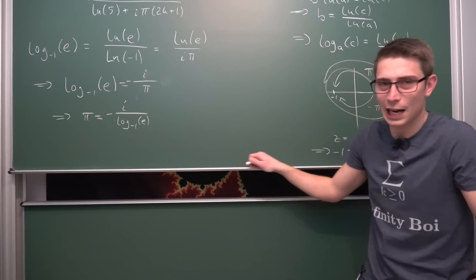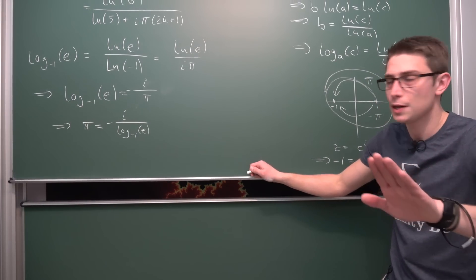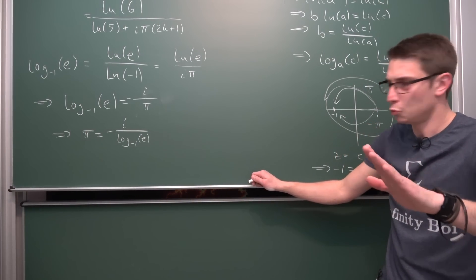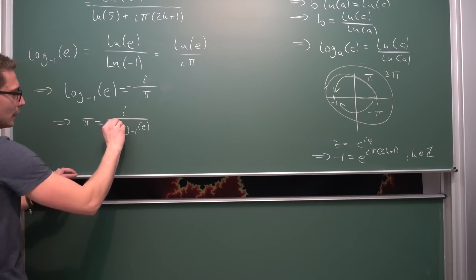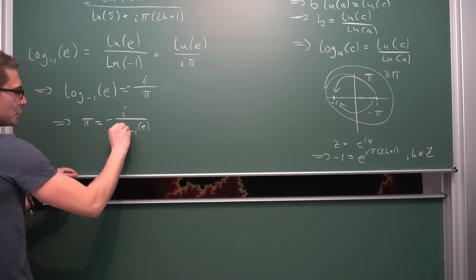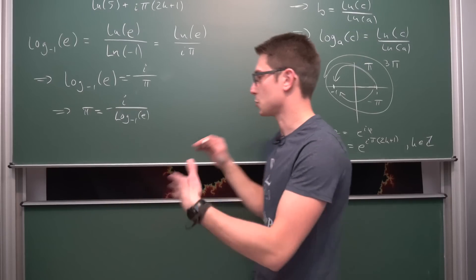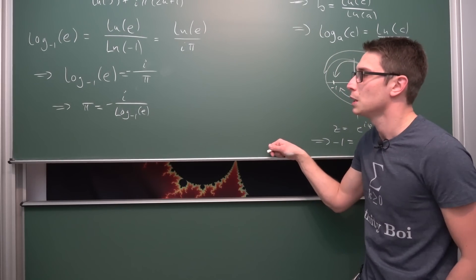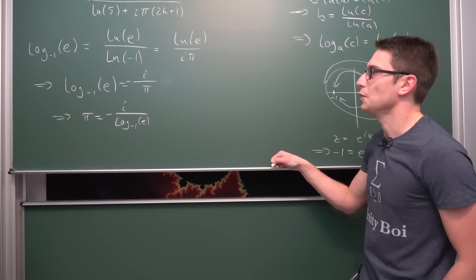To be completely rigorous, we need to say this is the principal logarithm to the base negative 1 of e. I like this identity — it's cool.